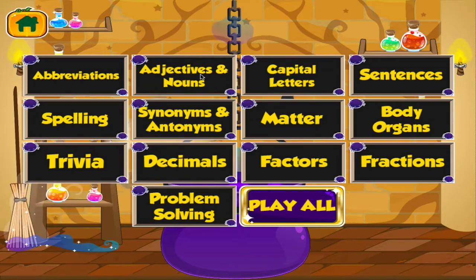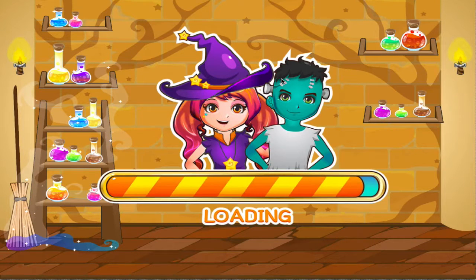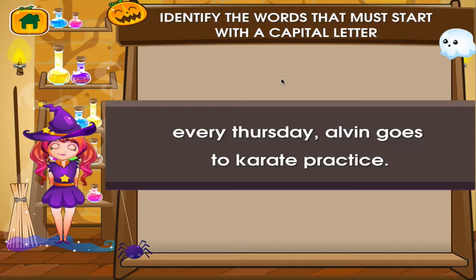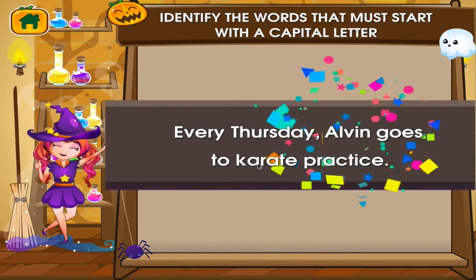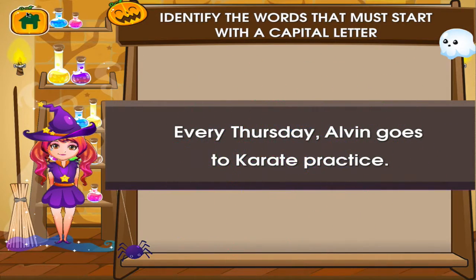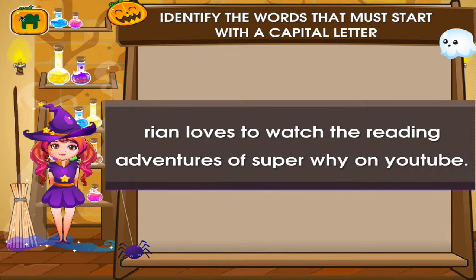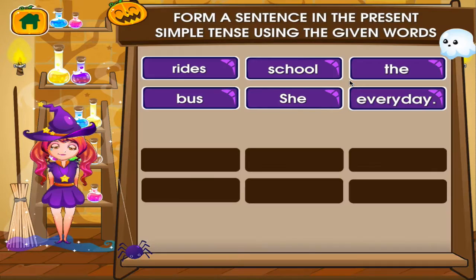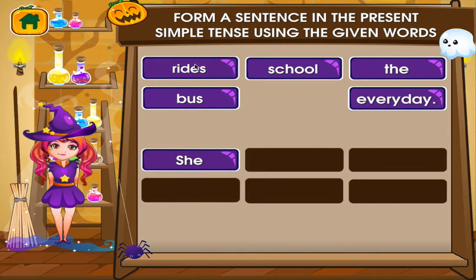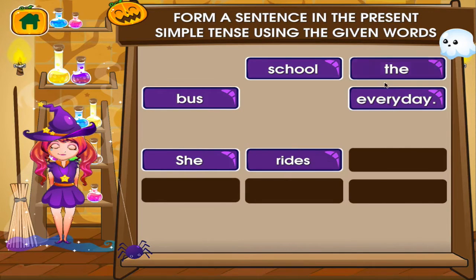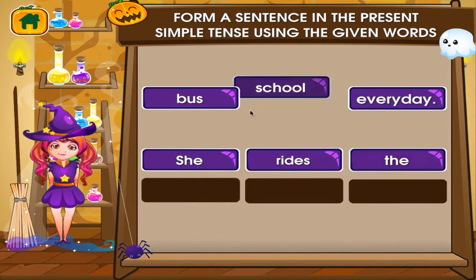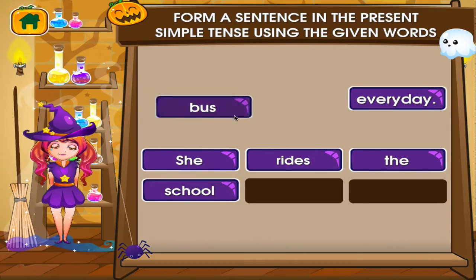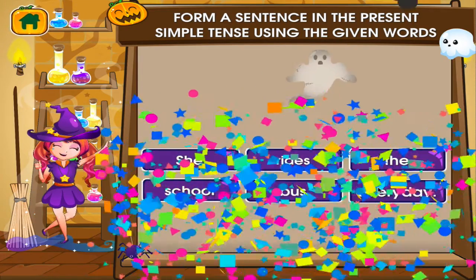Choose the activity you want to play. Capital letter. I can see you're getting better at this. Choose the activity you want to play. Sentences. Great work!